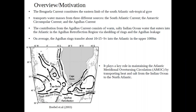The contribution from the Agulhas current consists of warm, salty Indian Ocean water. It enters the Atlantic via the Agulhas retroflexion region in the form of Agulhas leakage, eddies, and rings. On average there are about five to six Agulhas rings per year, and the total transfer is about 10 to 15 Sverdrup in the upper 1000 meters. The Benguela current is very important because it plays a key role in the Atlantic Meridional Overturning Circulation, as it is probably the warmest link, and it also transports relatively saltier water from the Indian Ocean to the Atlantic, playing a role in the MOC freshwater budget.